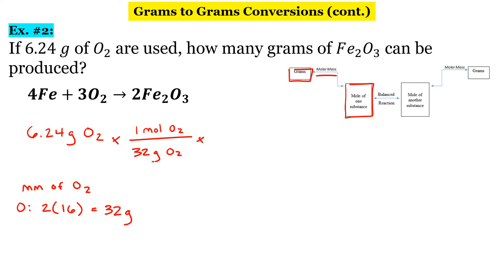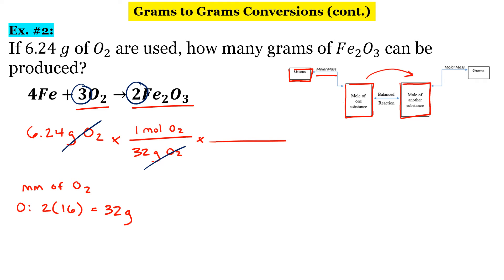So we're going from O₂ to iron oxide, and we have a ratio of 3 to 2. We can cancel out our grams of O₂. Now we need to set up our mole ratio. Our next step is to go from moles of O₂ to moles of iron oxide. So for every 3 moles of O₂, we have 2 moles of iron oxide. We can cross out units of moles of O₂.